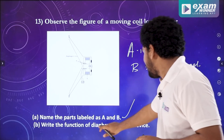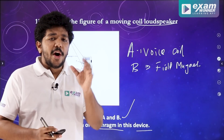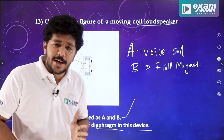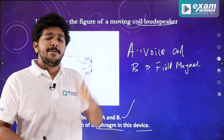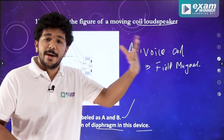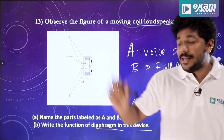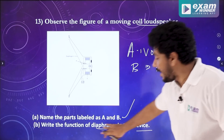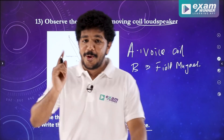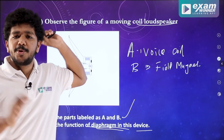Write the function of the diaphragm device. If you want to see the voice coil, the diaphragm vibrates. The diaphragm vibrates and the air molecules vibrate. You mark it out — one plus one is equal to two marks.